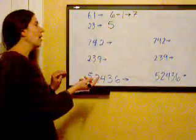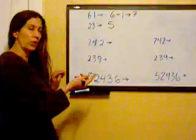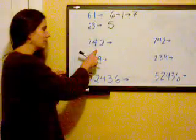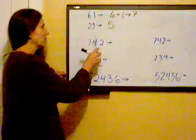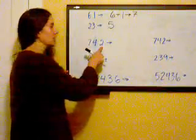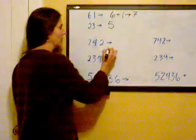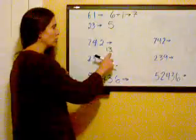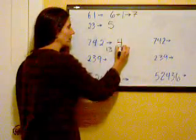The digit sum of 742, 7 plus 4 is 11, 11 plus 2 is 13, and the digit sum of 13 is 1 plus 3, 4.